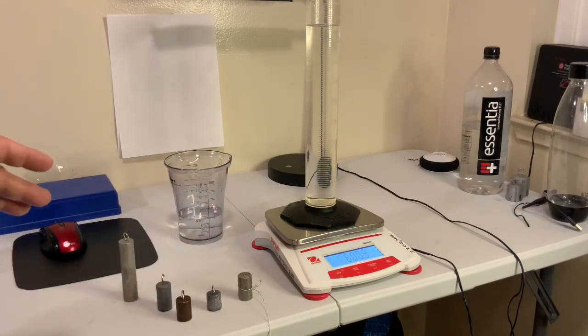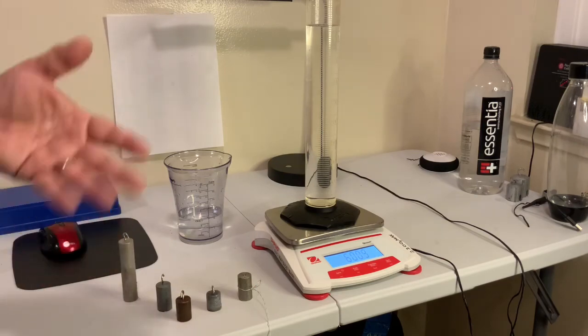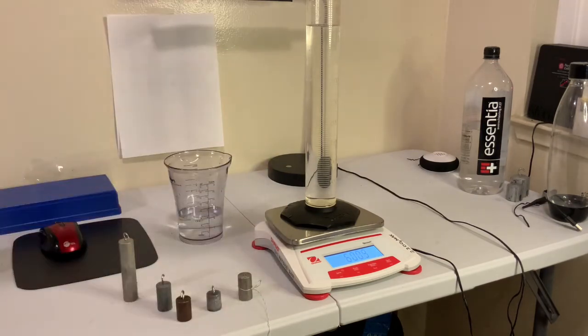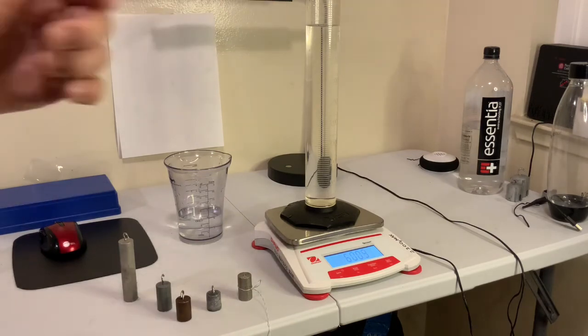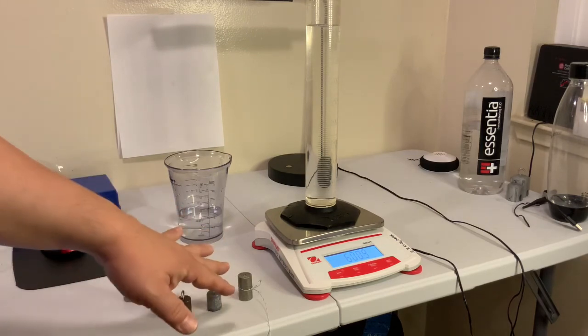The other thing to note, there's going to be some errors associated with the system. The beads of water on the outside of the sample took away some of the water. Of course, the thread or the string that we're hanging it on is also displacing some of the water in the system. It's a small amount, but it could be significant depending on how thick the string is.